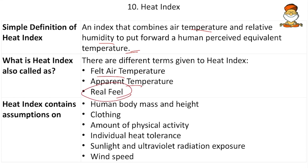The heat index includes: human body mass and height (indicating sweating), clothing (also affecting sweating), amount of physical activity, individual heat tolerance, sunlight and ultraviolet radiation exposure, and wind speed (deciding whether sweat evaporates). All these factors together determine the perceived heat.